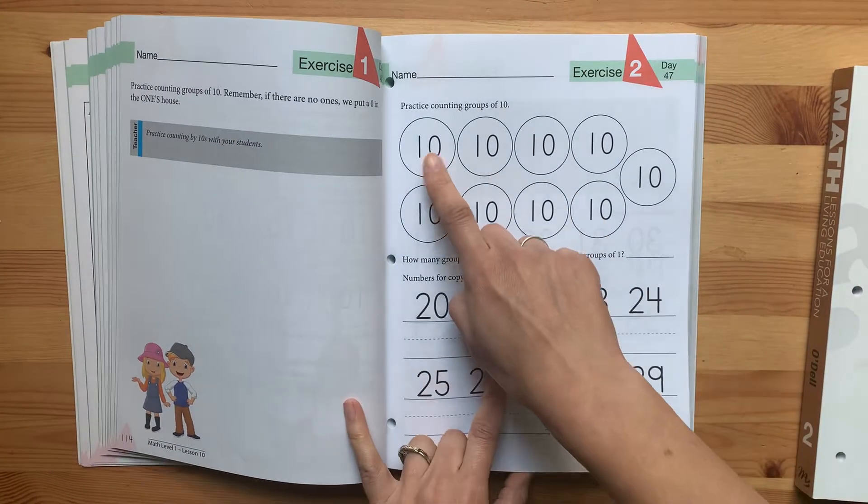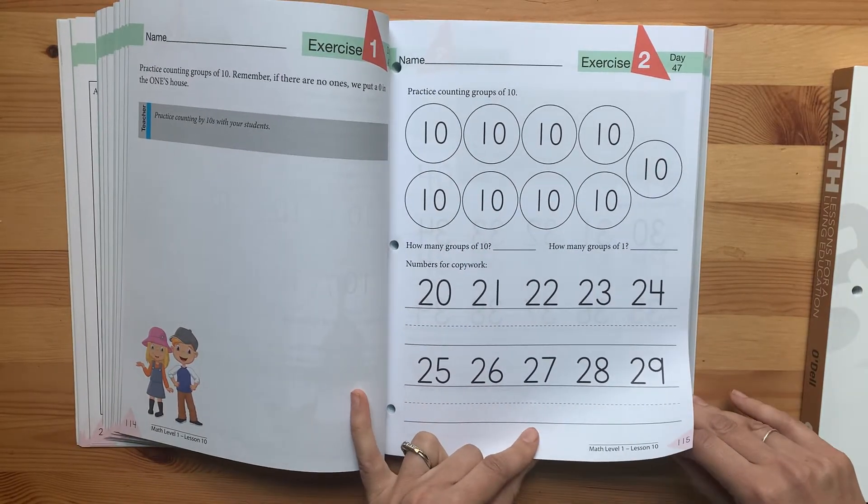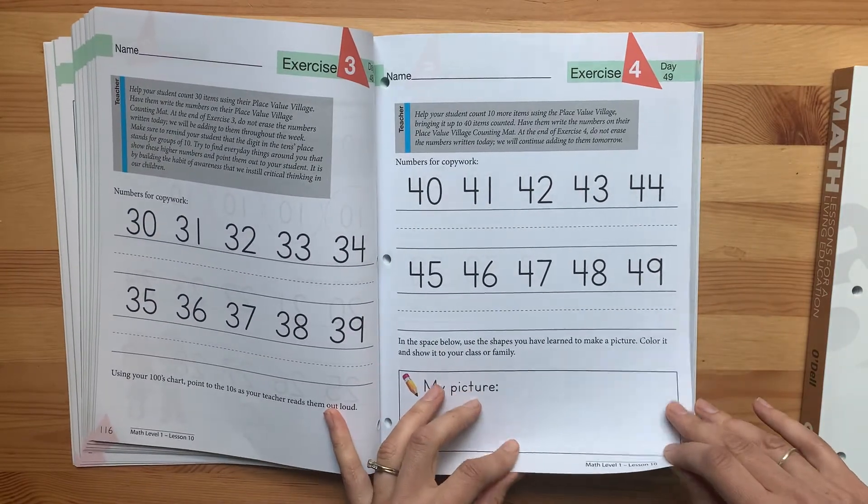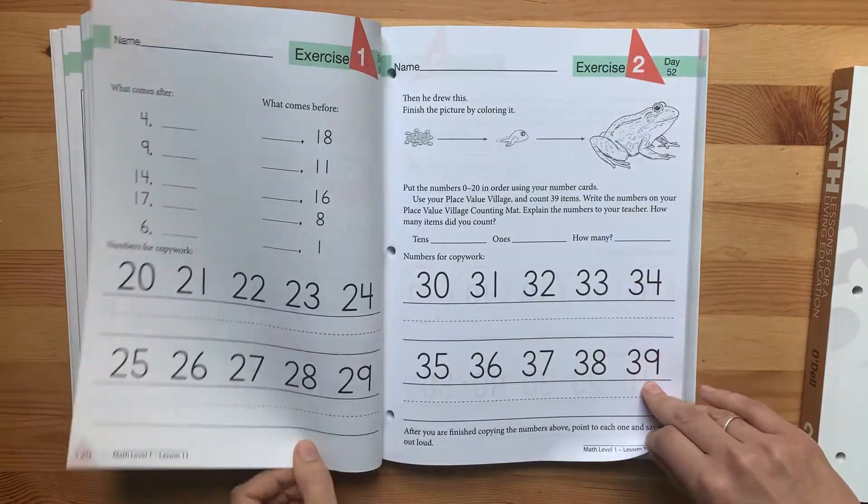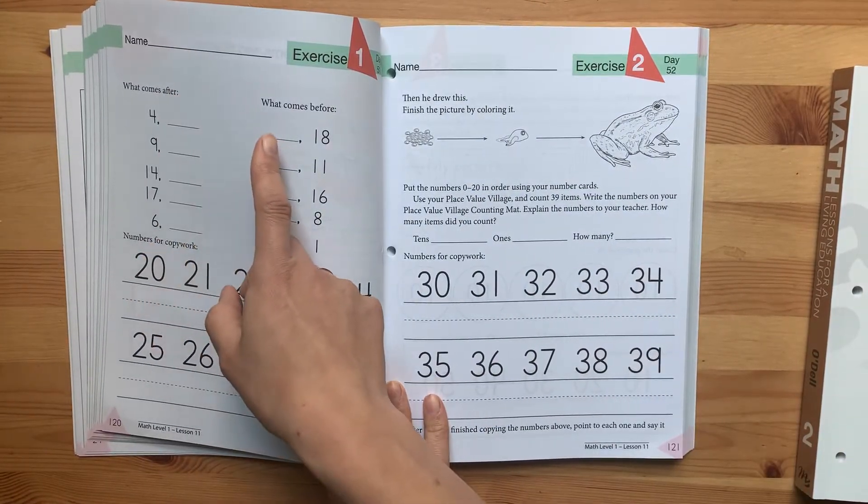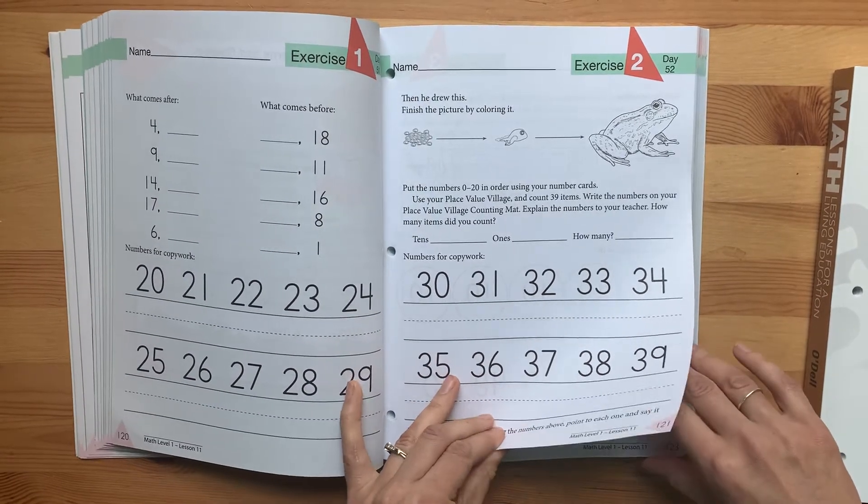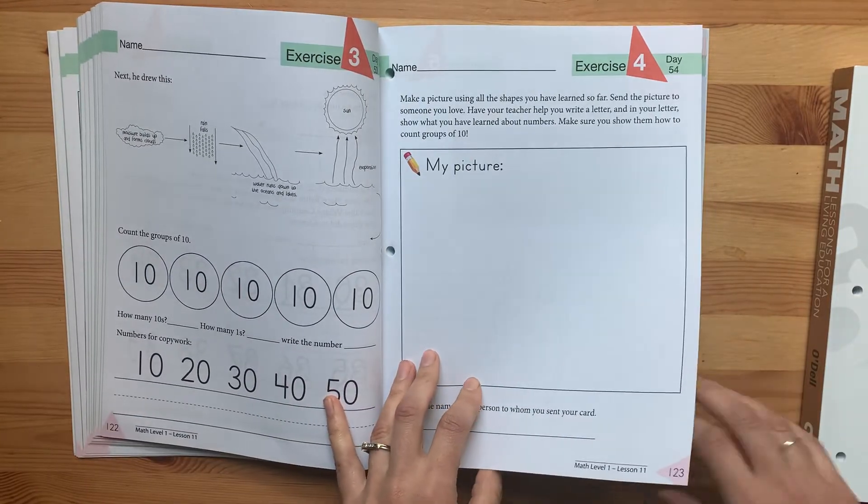Practicing counting groups of 10. Copying the numbers in the 30s and 40s. Practice with patterns and shapes. What comes before, what comes after. These are all concepts my son did in kindergarten through the Good and the Beautiful.